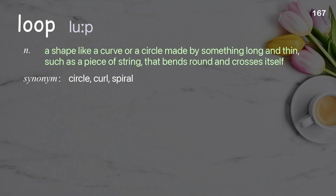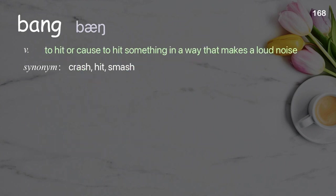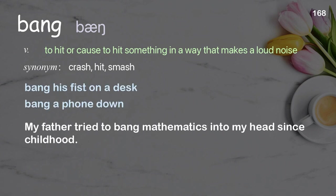Loop: a shape like a curve or a circle made by something long and thin, such as a piece of string, that bends round and crosses itself. Examples: exit from a loop, positive feedback loop. Many people in this city use the loop railway for transportation. Bang: to hit or cause to hit something in a way that makes a loud noise. Examples: bang his fist on a desk, bang a phone down. My father tried to bang mathematics into my head since childhood.